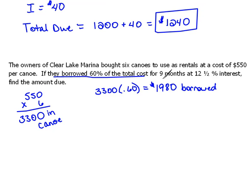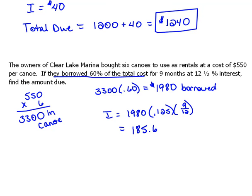They're going to borrow $1,980 for nine months at 12.5% interest. So the interest would be $1,980 times .125 times 9/12 of a year. If we put that in our calculator, we get 185.62-something. We need to round it up because we always round up whenever we're dealing with money — they never work in your favor. So the interest is $185.63.